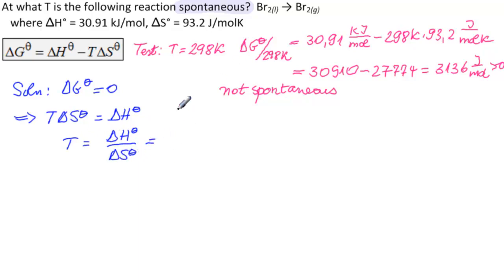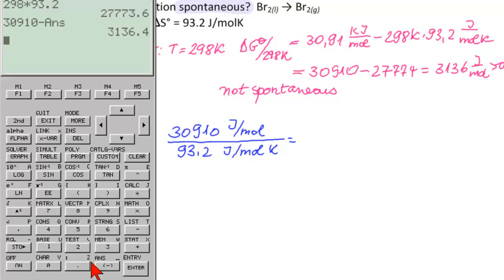So now we can calculate that. This is 30,910 joules per mole divided by 93.2 joules per mole Kelvin, so we expect to get Kelvin here. Let's get our calculator up. So we have 30,910 divided by 93.2.